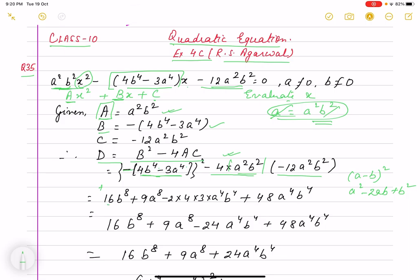Here, 4² is 16, (b⁴)² is b⁸, 3² is 9 giving 9a⁸, and 2ab is 2 × 4b⁴ × 3a⁴, which is 24a⁴b⁴.